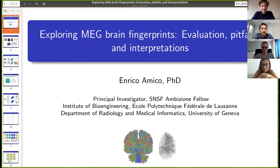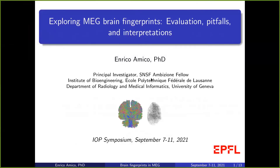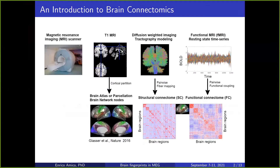Thanks Marco for the introduction and invitation. My talk is about brain fingerprinting and how to detect brain fingerprints in MEG data. Before getting into that, I should set the basics for whoever is not familiar with brain fingerprints or brain connectomics. My main expertise is brain connectomics — the use of network science to study the brain as a network. To do so, you need to define nodes and links from brain data.